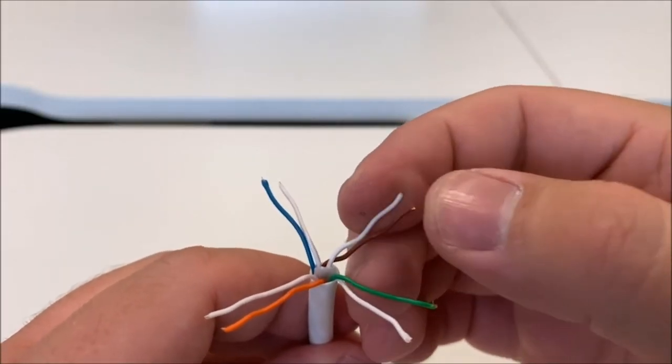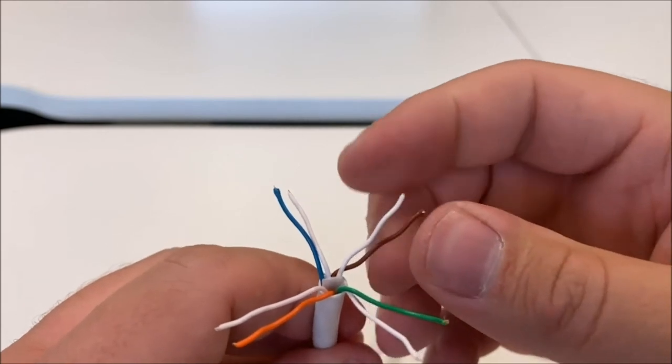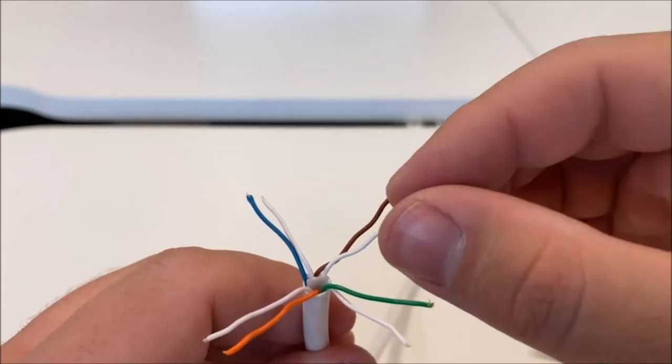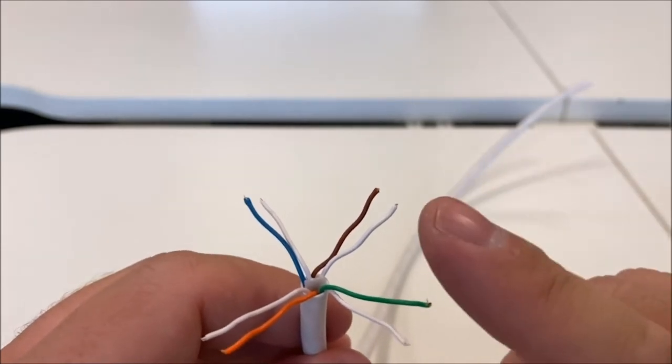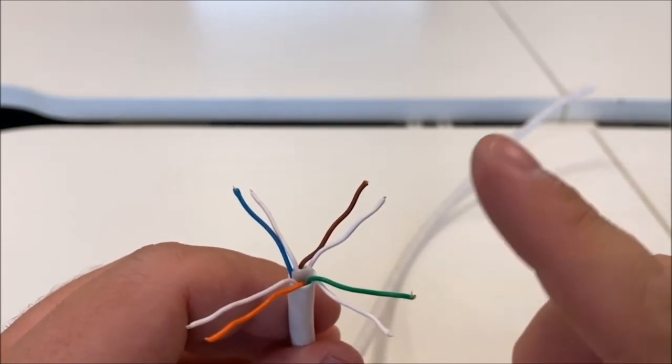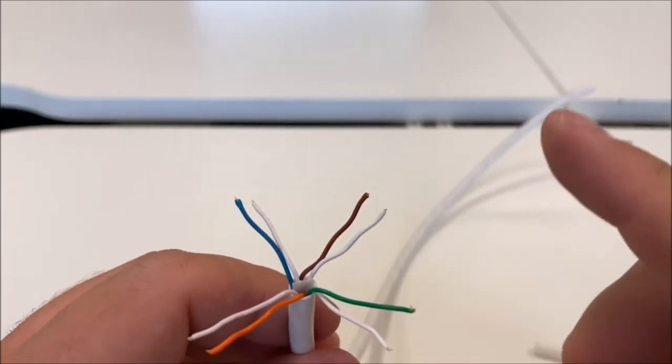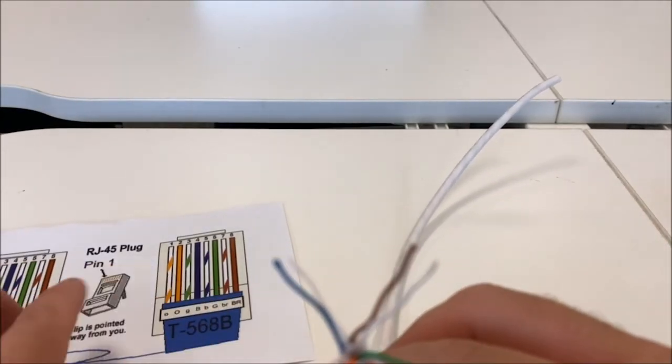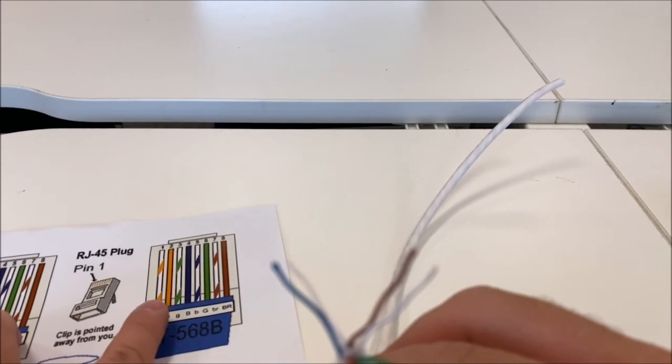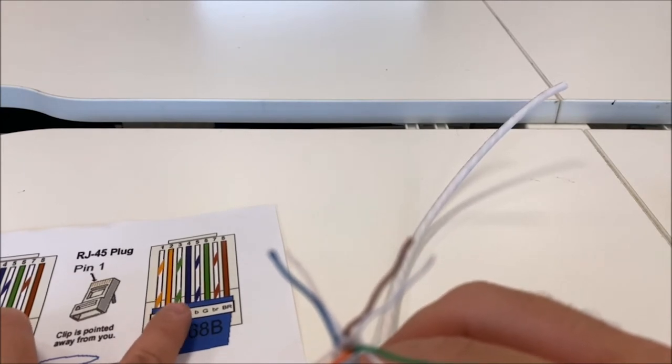I sped that section up. So now what you'll have, you'll have your untwisted pairs—that will be your brown and white, etc., etc. The reason I kept them next to each other is so that you don't lose which one's white and which one's for which color. Now we're going to need our diagram again, so we're going to need to line them up in the order it says here: orange-white, orange, green-white, blue, blue-white, green, brown-white, brown.